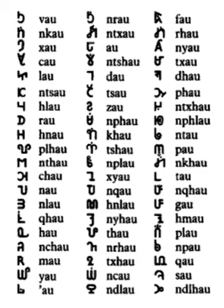For an example of the positional variation, consider the phrase in RPA orthography. Since the first word, KUV, starts with K, it is written as the bare rhyme UV in Paha. The word RAU, with mid-tone O as the rhyme, is normally written as a bare onset R, and indeed this is the case for the second instance in this sentence. However, since the first RAU follows a bare rhyme, it cannot be written as a bare onset R, or the combination might be read as RUV rather than KUV RAU. Therefore, the combination KUV RAU is written UV RAU rather than UV R, with the rhyme O made explicit.